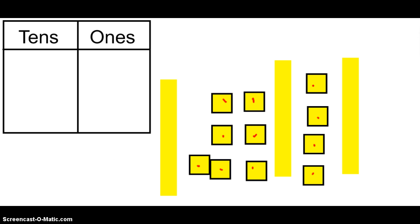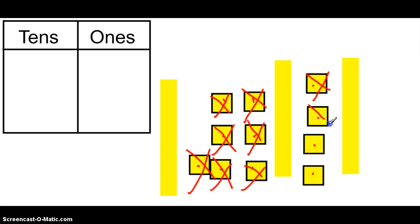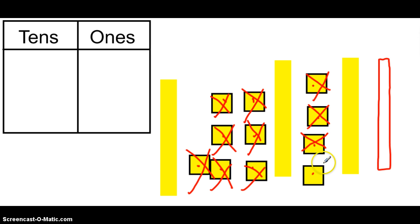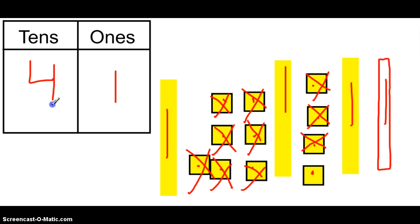Do you remember what I can do instead? Did you say trade them in for a tens rod? You're right. Let's trade in 10 ones cubes for one tens long. Now that I've traded that in, I'm ready to count. I have one left, so I'll put my one here. Let's count up how many tens longs — one, two, three, and don't forget the one we traded in: four. Forty-one.